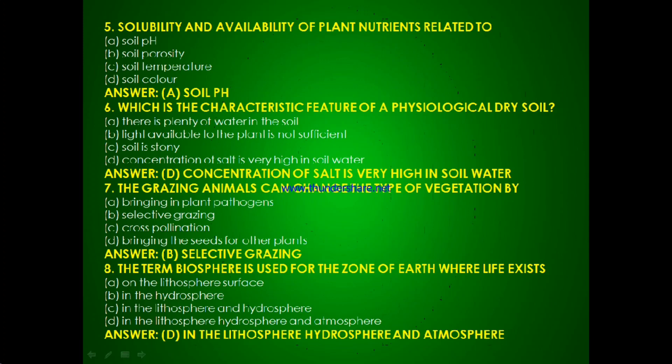Question 5: Solubility and availability of plant nutrients is related to — soil pH, soil porosity, soil temperature or soil colour? The answer is A, soil pH.